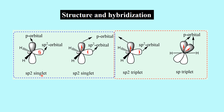In sp2 singlet: three sp2 hybridized orbitals exist — two are bonded with hydrogen or another substituent, one holds a pair of electrons, and one is vacant. Therefore the electrons are paired (singlet), and due to the vacant orbital it can behave as an electrophile. In sp2 triplet: although the two orbitals are not degenerate, electrons go to separate orbitals. In sp triplet: the two sp hybridized orbitals are bonded to hydrogen and the two vacant p orbitals each have one electron.